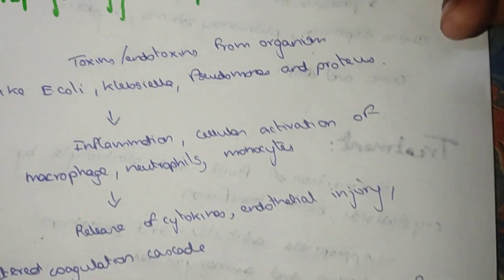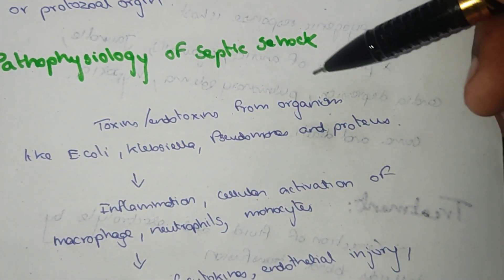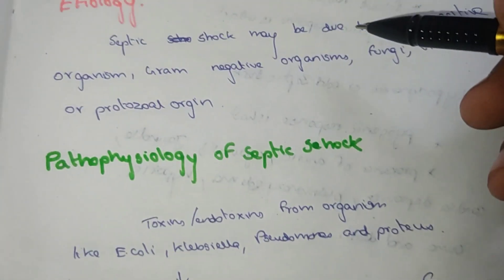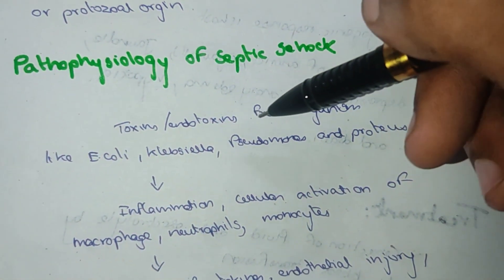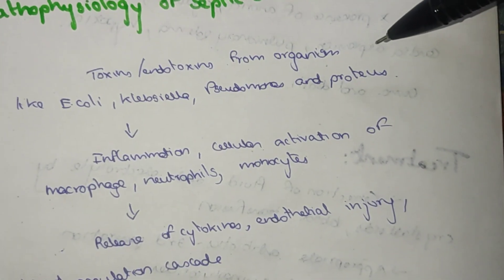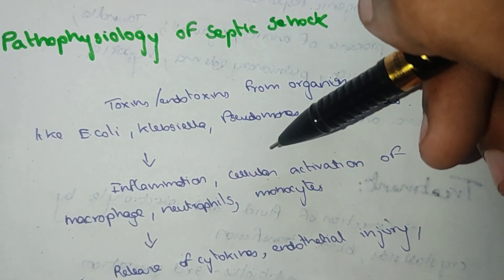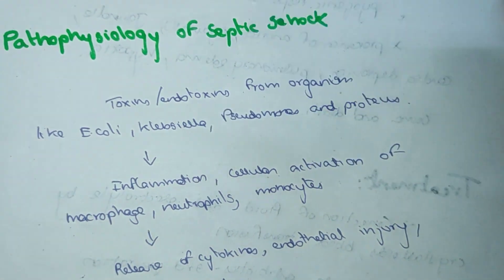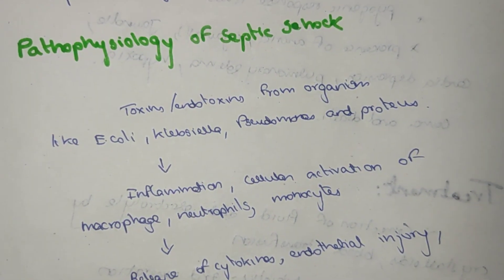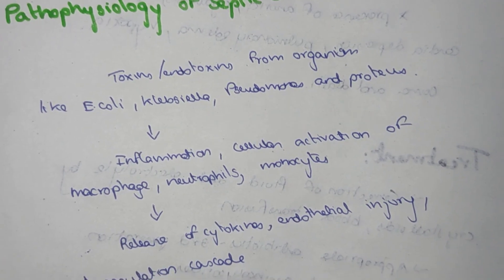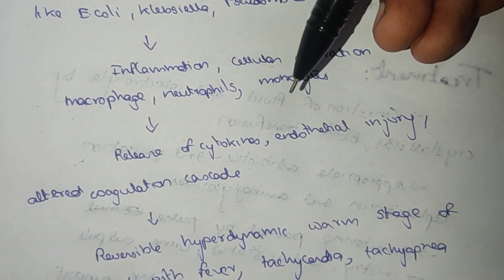Pathophysiology of septic shock: toxins and endotoxins from organisms such as E. coli, Klebsiella, Pseudomonas, and Proteus cause inflammation and cellular activation of macrophages, neutrophils, and monocytes, followed by release of cytokines.